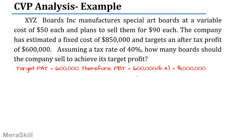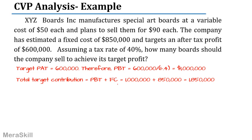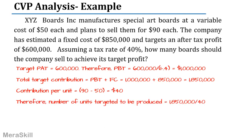You can solve it using the formula: profit after tax equals profit before tax divided by (1 minus tax rate). The total target contribution is profit before tax plus fixed cost: 1,000,000 plus 850,000 equals 1,850,000. Contribution per unit is 90 minus 50 equals $40. Therefore, units required are 1,850,000 divided by 40, which equals 46,250 units to earn the required after-tax profit.